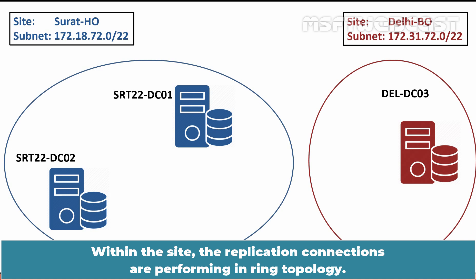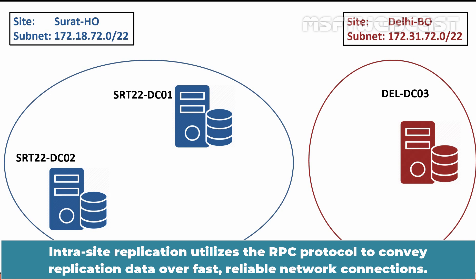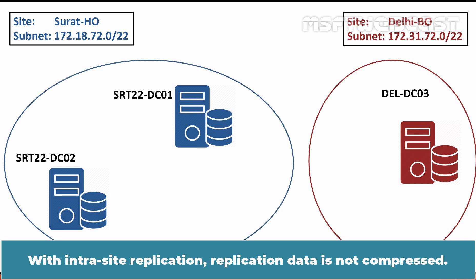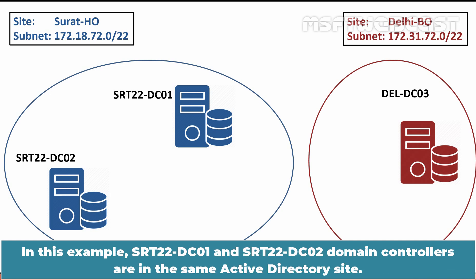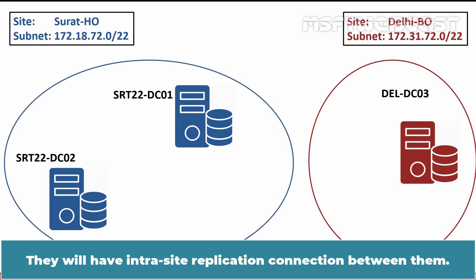Within a site, replication connections are performed in a ring topology. Intrasite replication utilizes the RPC protocol to convey replication data over fast, reliable network connections, and replication data is not compressed. In this example, SRT22-DC01 and SRT22-DC02 are in the same Active Directory site, so we will have intrasite replication connections between them.